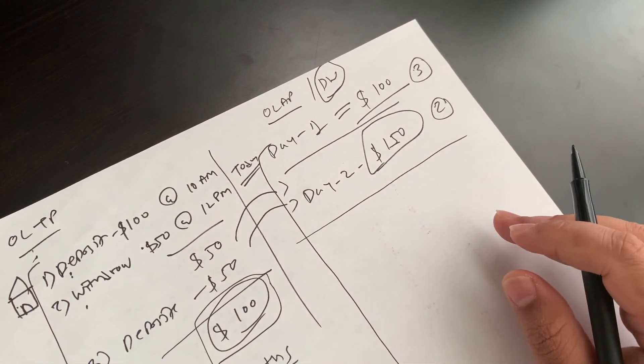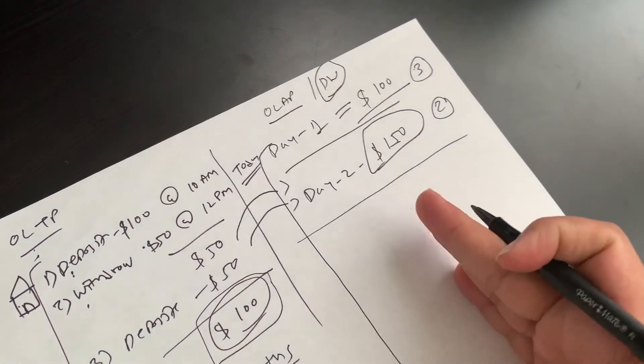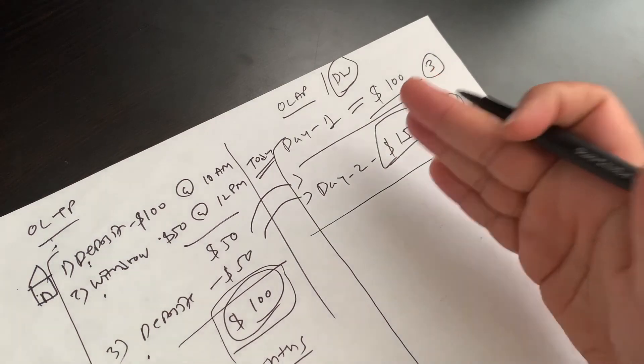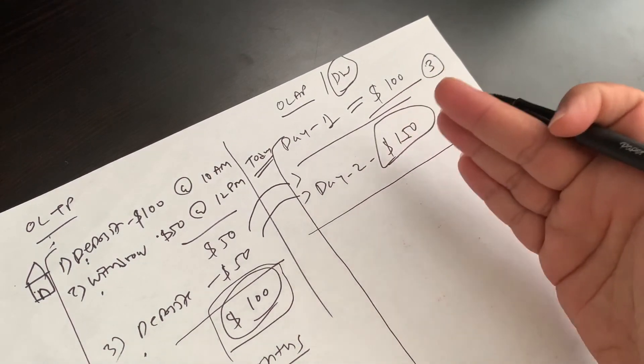So this is the simple example. I hope you guys understand OLTP and OLAP. Again, OLTP is Online Transaction Processing, and OLAP is Online Analytical Processing.